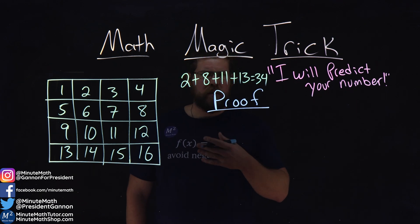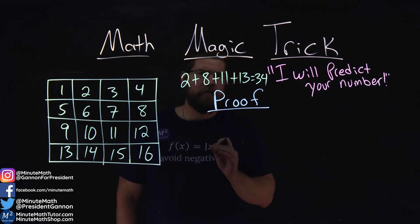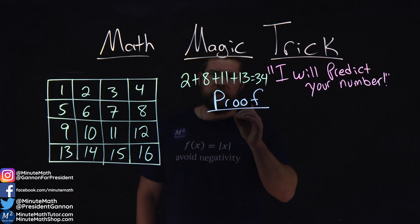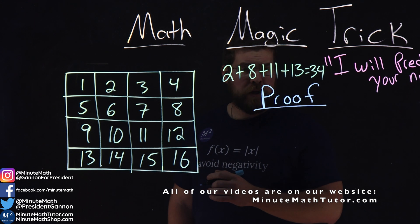Now, if you're like me, you're wondering how does that work? Well, there's a proof for it. We can see mathematically why it always becomes 34. So to analyze this, let's look at our first column here.